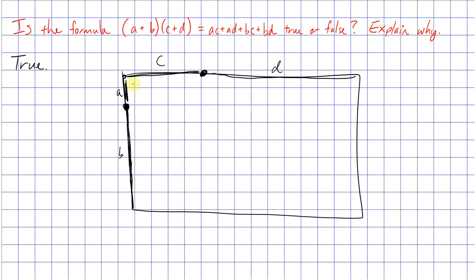So in total this rectangle is (A+B) for this length, and then this length is (C+D) all the way across. So the area should be (A+B) times (C+D), and that's what's represented on the left side here.